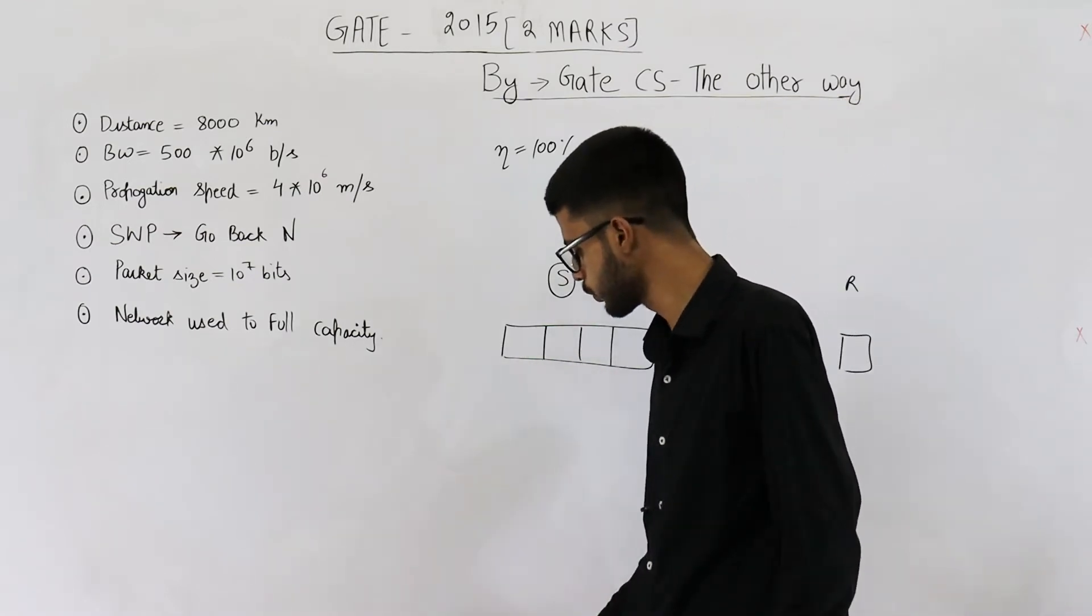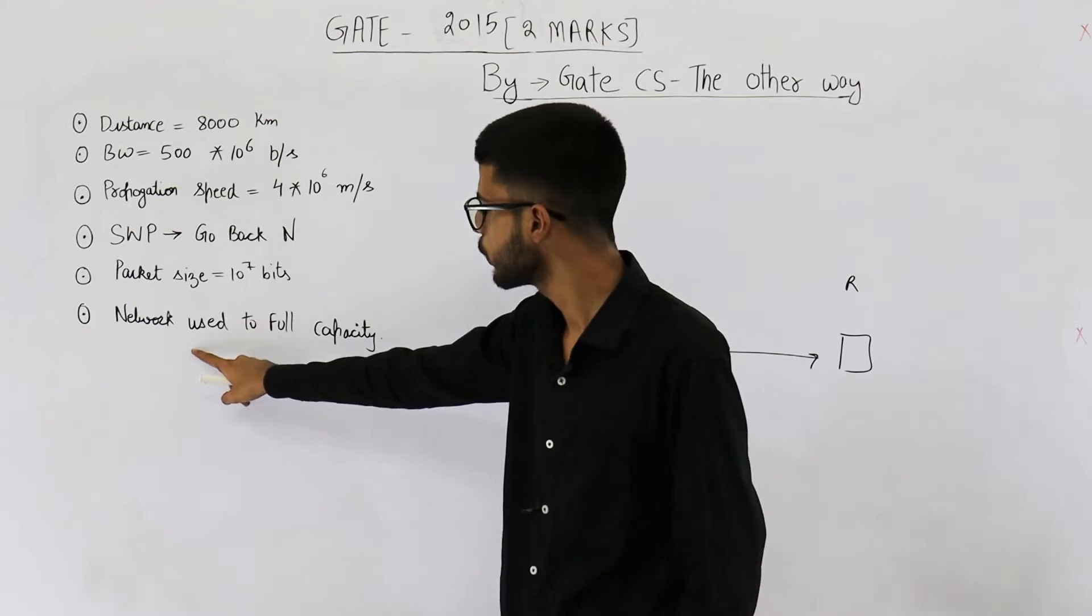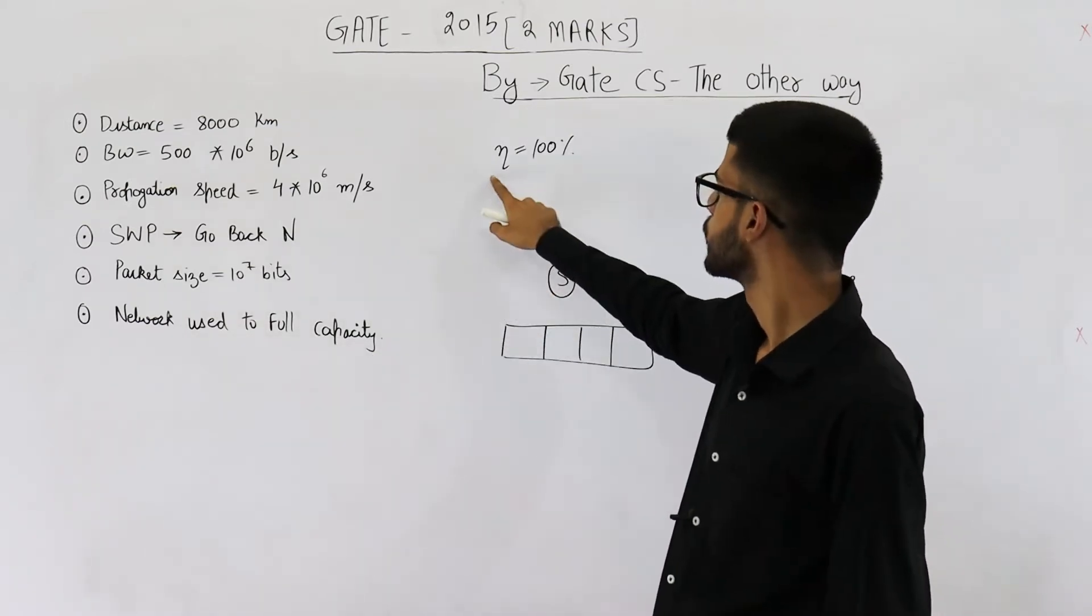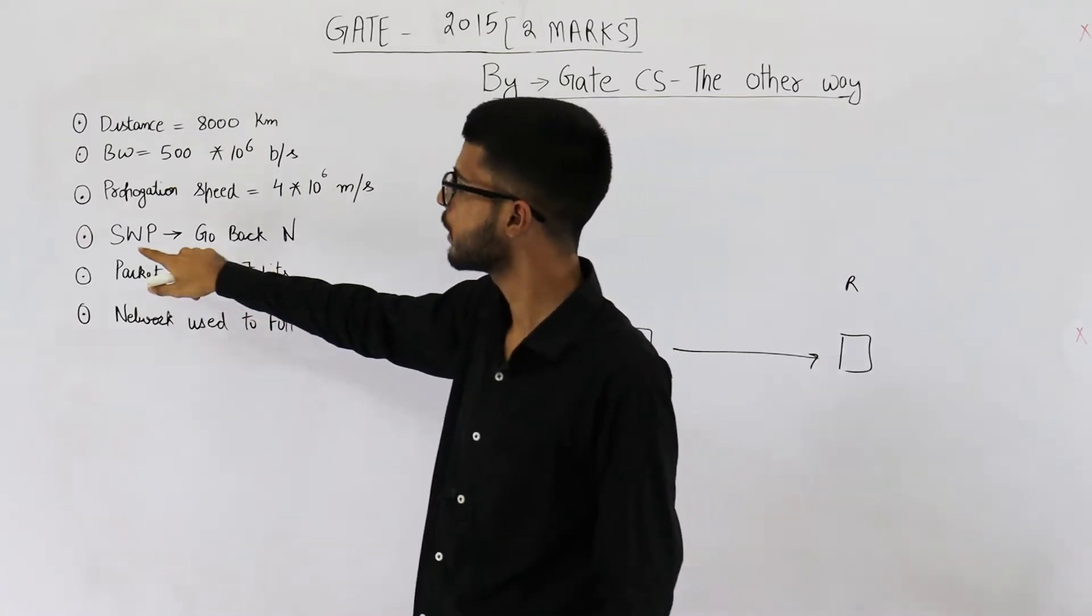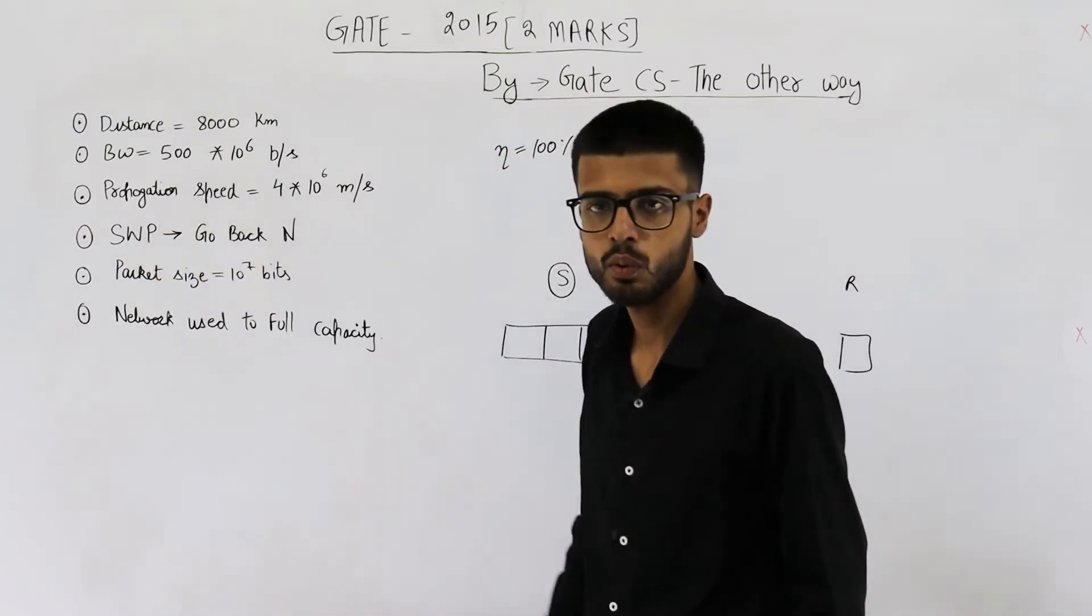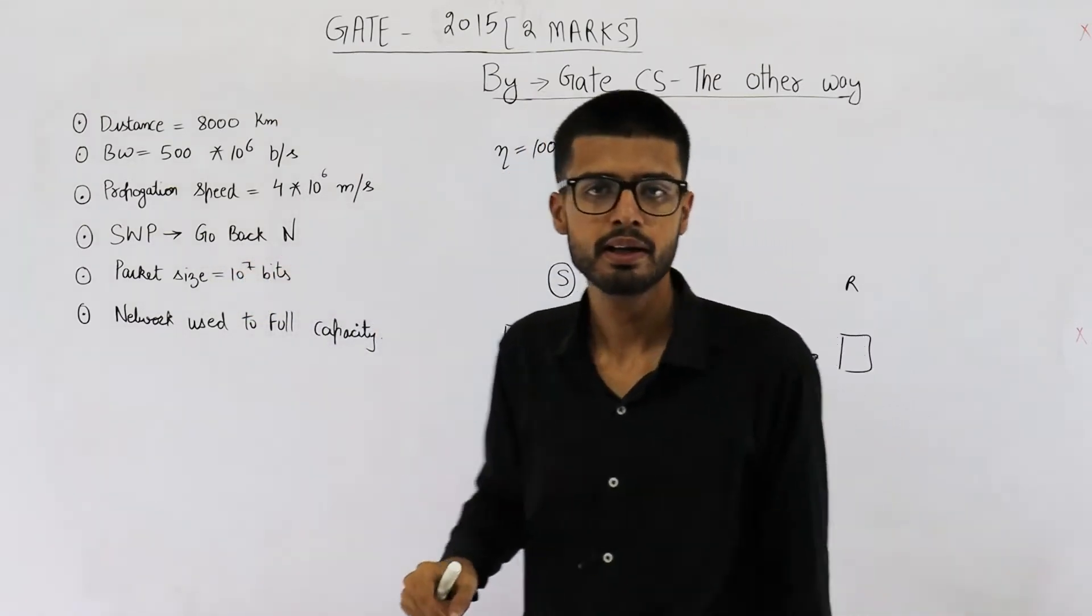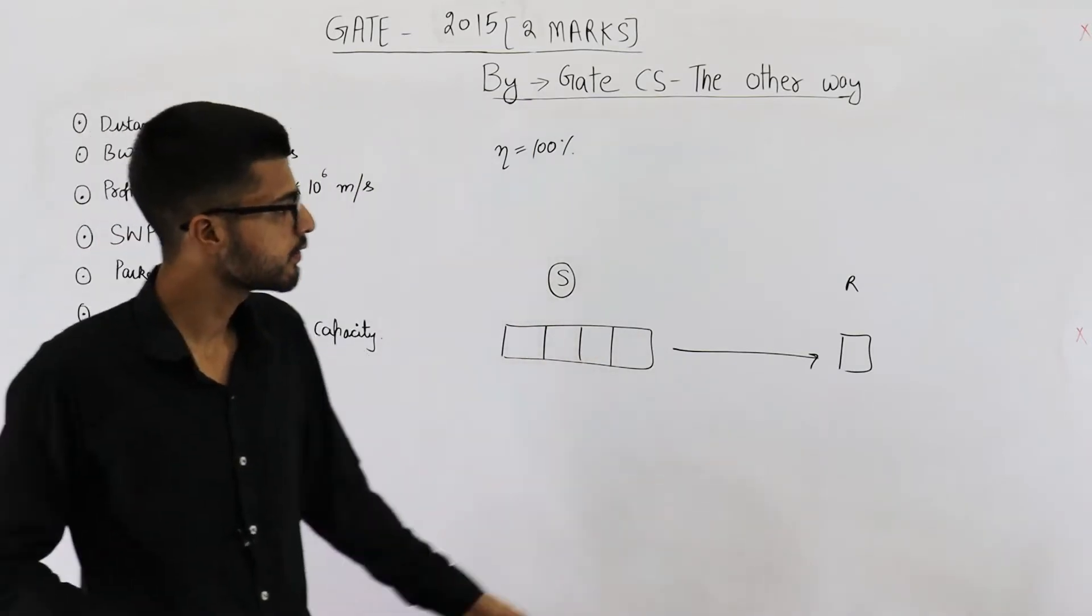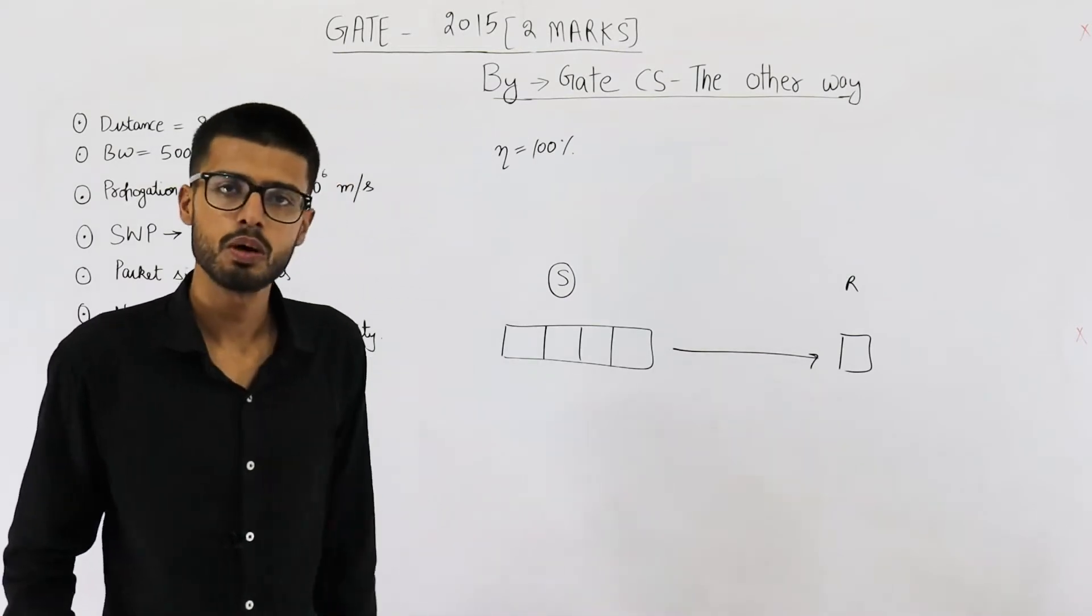You can see we want to use this network to its full capacity. Using a network to its full capacity means we want efficiency of 100%. The algorithm that has been used is sliding window protocol of the type go back N. In go back N, sender window size is n. Receiver window size is always fixed to 1. That is the reason it's called go back N.